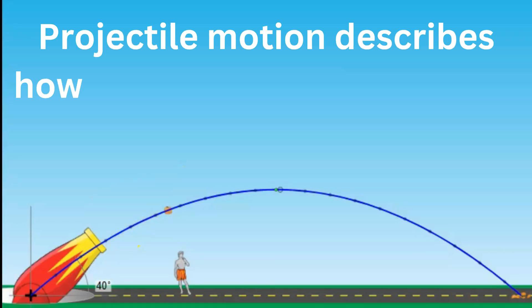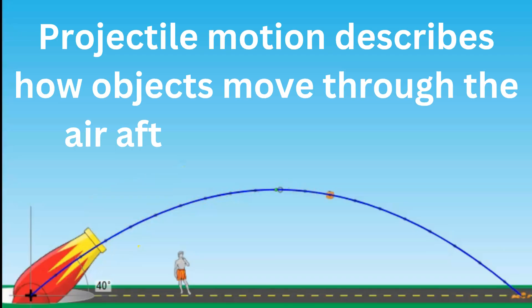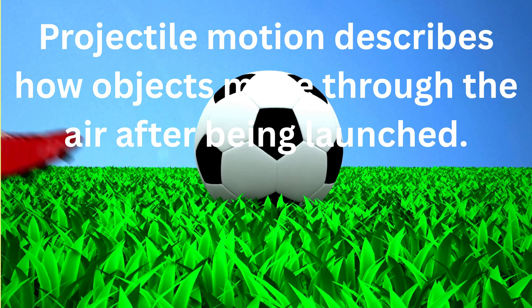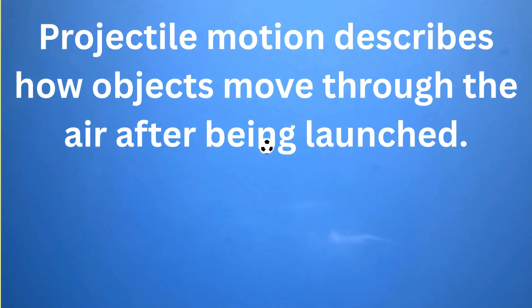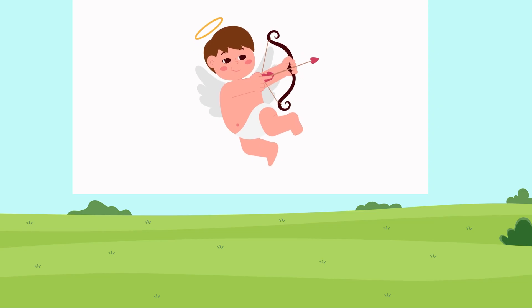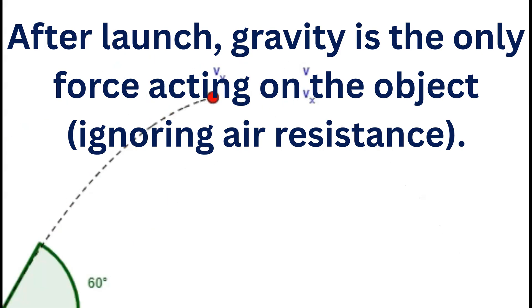Projectile motion describes how objects move through the air after being launched, like when a ball is thrown or an arrow fired. After launching, the only force acting on the projectile is gravity, ignoring effects of air resistance.